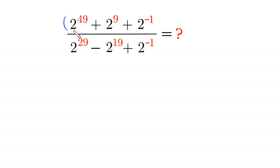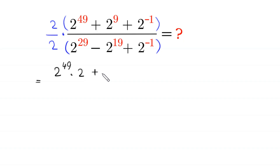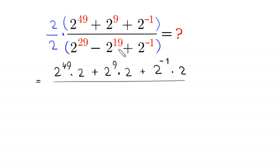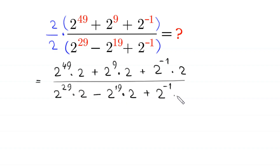So, let's start by multiplying this expression by 2 over 2. This will become: 2 times 2 to the power 49 will become 2 to the power 49 times 2, plus 2 to the power negative 1 times 2, divided by 2 times this expression, which will become 2 to the power 29 times 2, minus 2 to the power 19 times 2, plus 2 to the power negative 1 times 2. Now, each of these extra 2s has power 1.